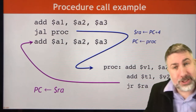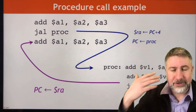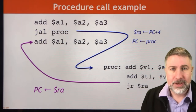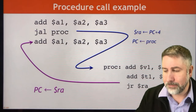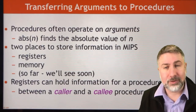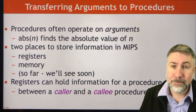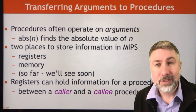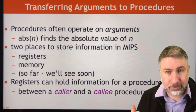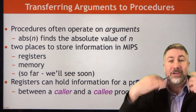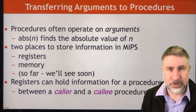But a procedure is not very good unless you can pass information back and forth. You can give information to the procedure and then pass information back from the procedure to the main program. This is going to be accomplished using what we call arguments and return values. This is in a high-level language a pretty standard approach — we use an argument to get information into a procedure and then a return value to get information back from the procedure.